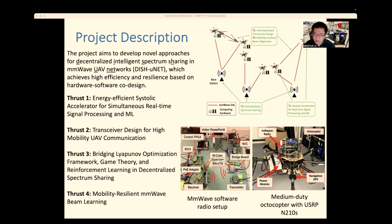Our project aims to develop novel approaches for decentralized intelligent spectrum sharing in millimeter wave UAV networks. We call that DISH-UNET. This network can achieve high efficiency and resiliency based on hardware and software co-design.